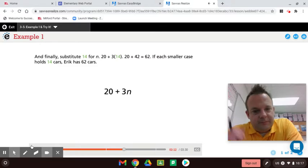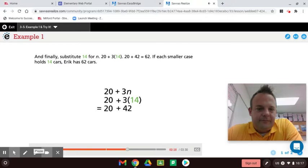And finally, substitute 14 for n. 20 plus 3 times 14. 20 plus 42 equals 62. If each smaller case holds 14 cars, Eric has 62 cars.